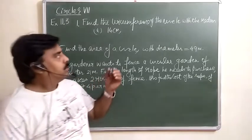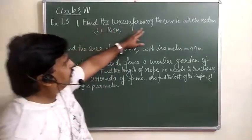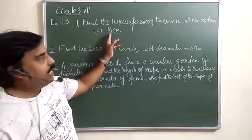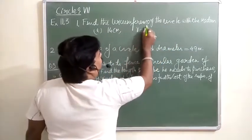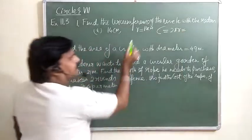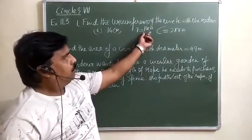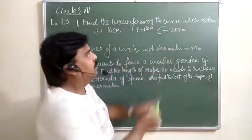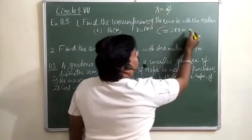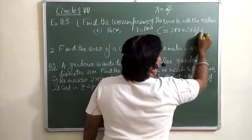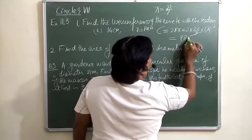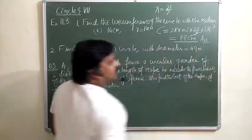Question 1: Find the circumference of the circle with radius 14 cm. Circumference = 2πr = 2 × (22/7) × 14. Simplifying, 7 cancels, giving 2 × 22 × 2 = 88 centimeters. This is the circumference of the circle.